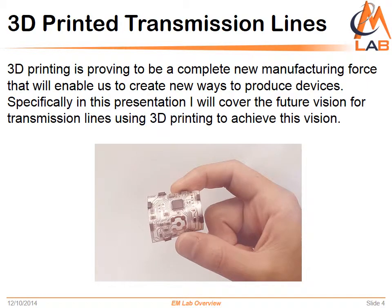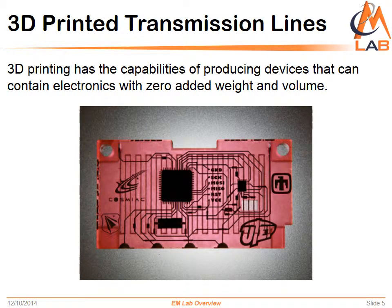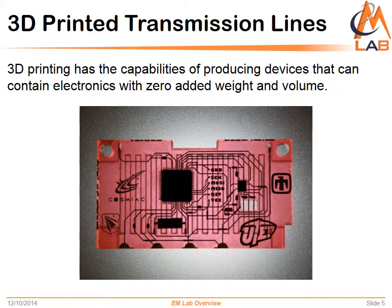3D printing has the capabilities of producing devices that can contain electronics with zero added weight and volume. Simply put, picture the electronics being part of the structural components of the device. In the picture shown you can see a flat piece of plastic, but notice that the electronics are embedded inside the plastic. This method goes around the current way we produce electronics with PCB boards, fasteners, cables, and connections going all around.